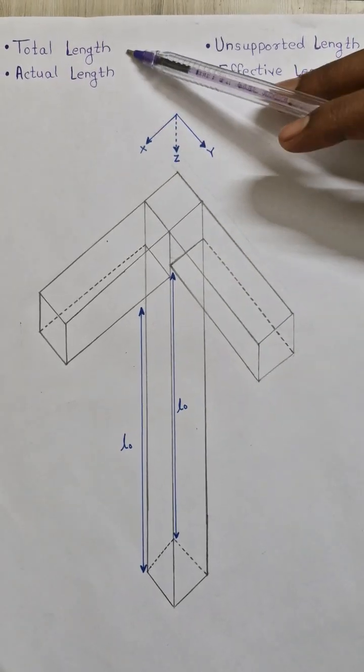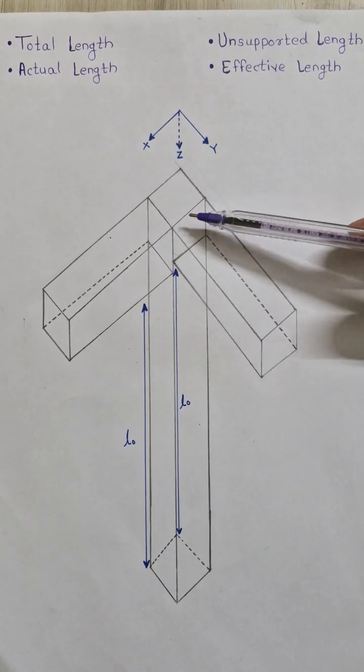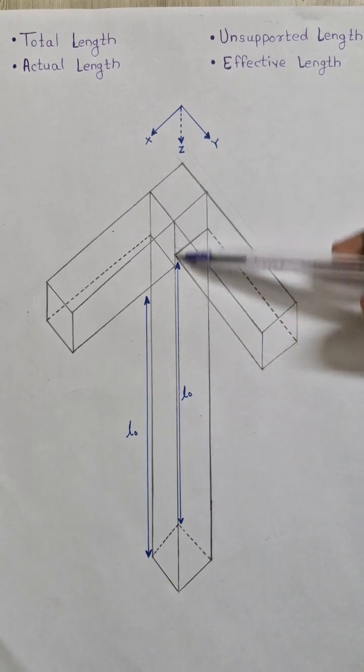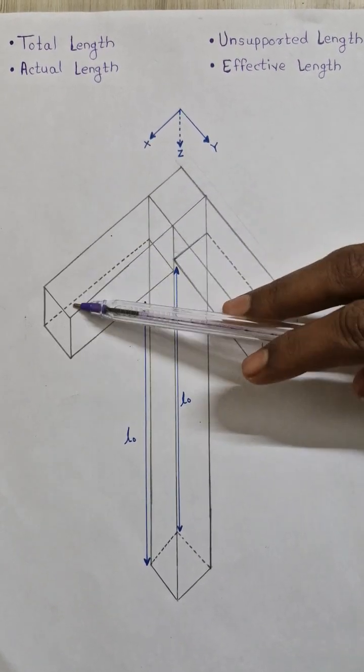Let's try to understand the meaning using this figure. This figure consists of a column and there are two beams.